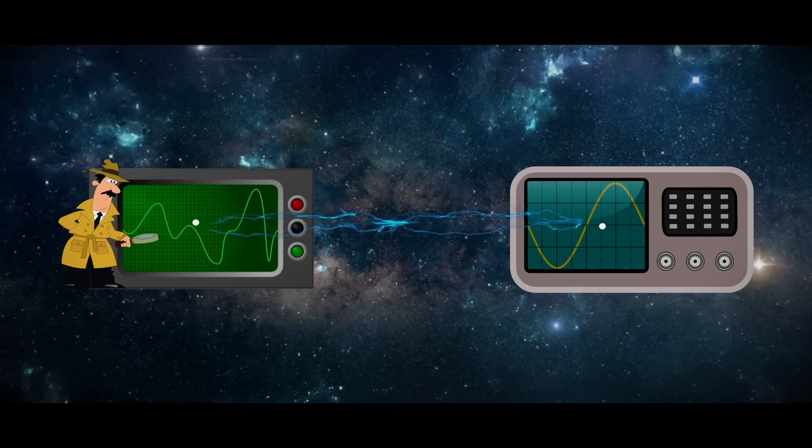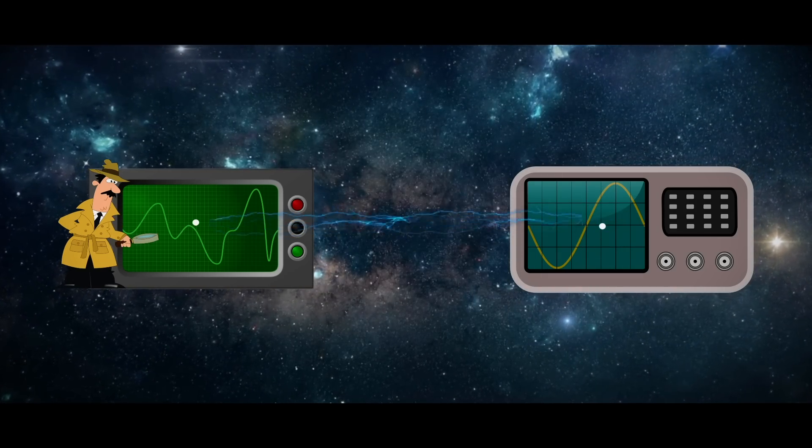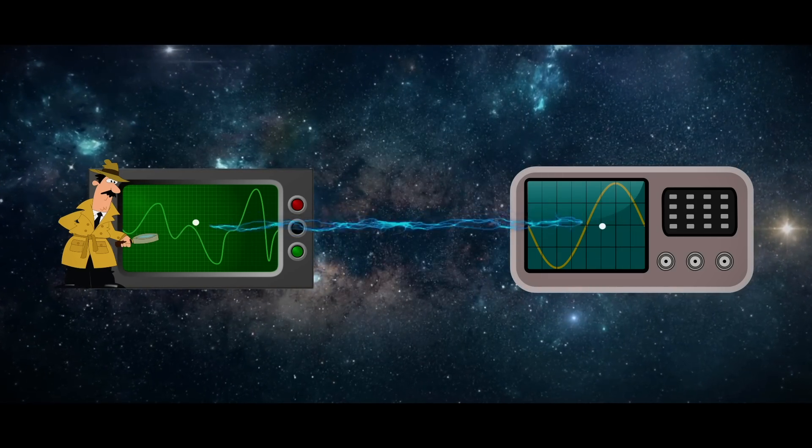Even at, say, 100 million light years apart, this shared state remains as strong as it was when the electron was first split.